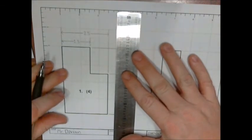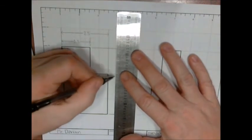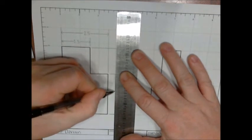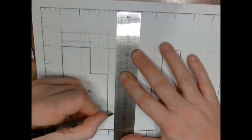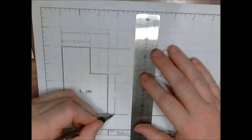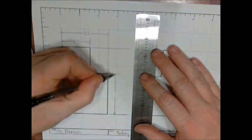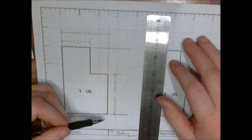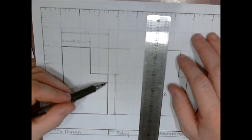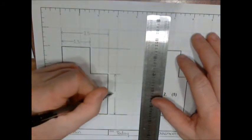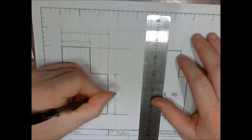I am going to use my ruler now and do the first dimension line, leaving a gap in the middle. Put my arrowheads on, count however many inches - one, two and a half - two point five.